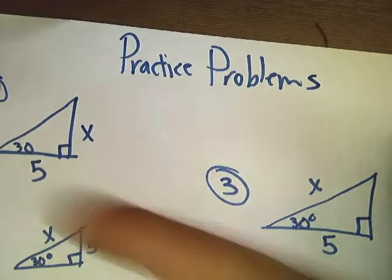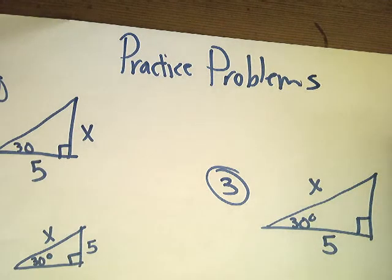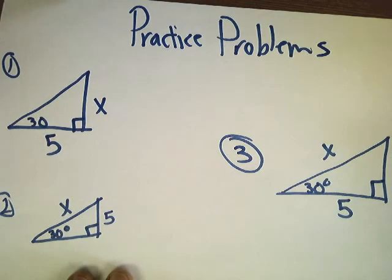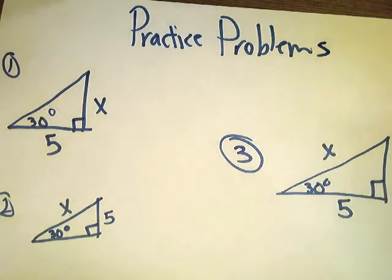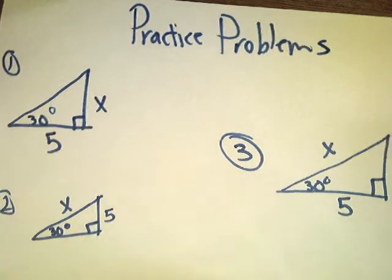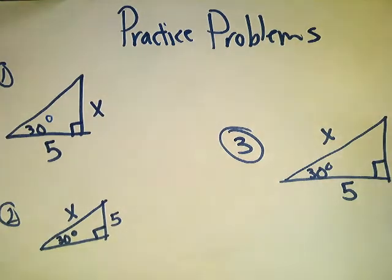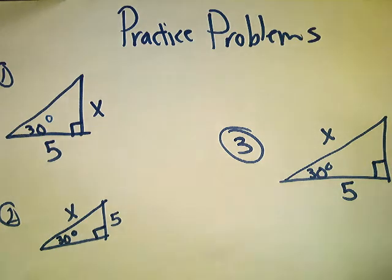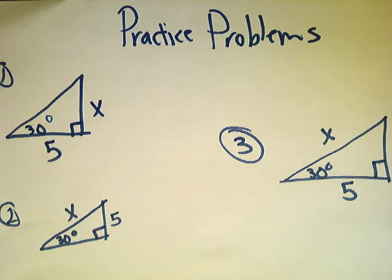Here are some practice problems. Get out your pew pew — everyone has a thumb and a forefinger. Here are three problems for you to work on. Problem 1: angle is 30 degrees, sides are x and 5. Problem 2: 30 degrees, sides are 5 and x in different positions. Problem 3: x and 5 are in yet another configuration. They all have the same components but none will have the same answer — I'm trying to get you to understand that it matters whether you pick sine, cosine, or tangent. Please pause the video now.